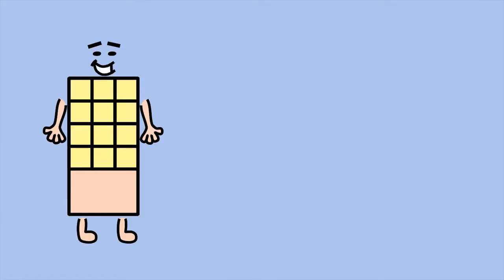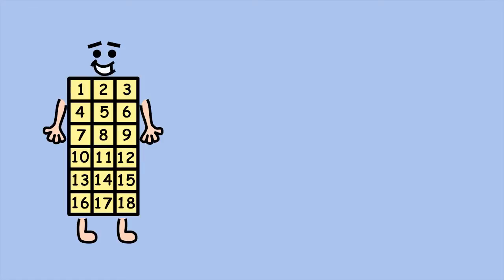Hi, I'm a rectangle. You can work out my area by counting the number of squares that fit inside me: 1, 2, 3, 4, 5, 6, 7, 8, 9, 10, 11, 12, 13, 14, 15, 16, 17, 18.